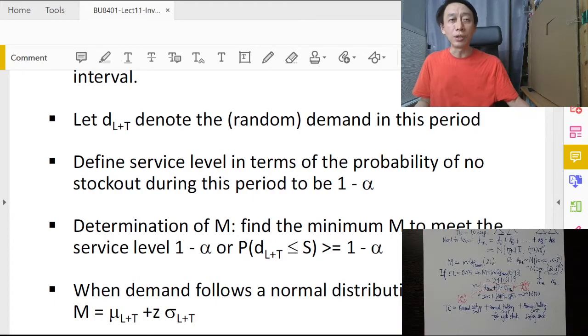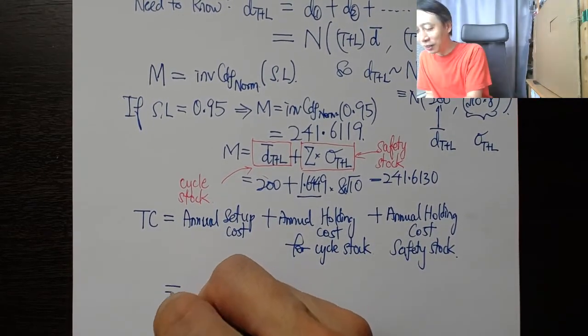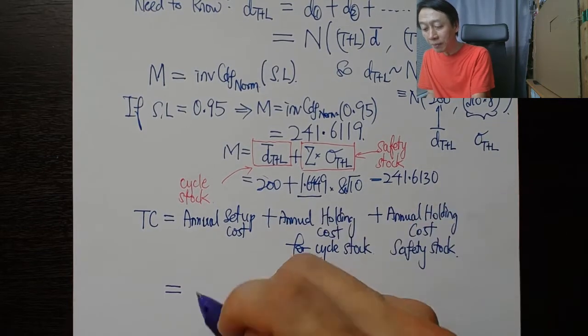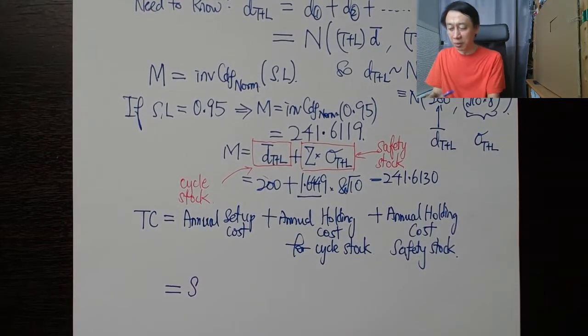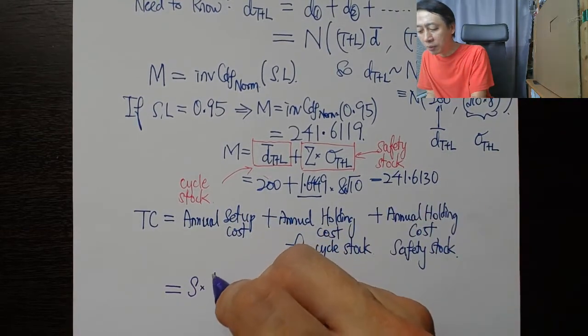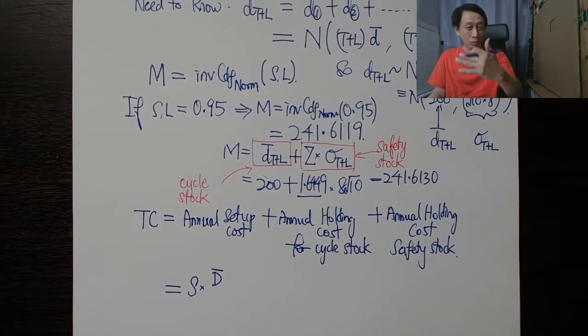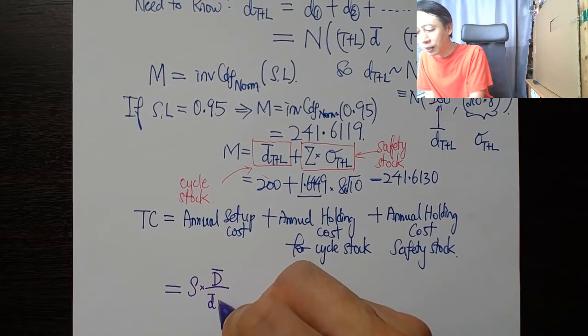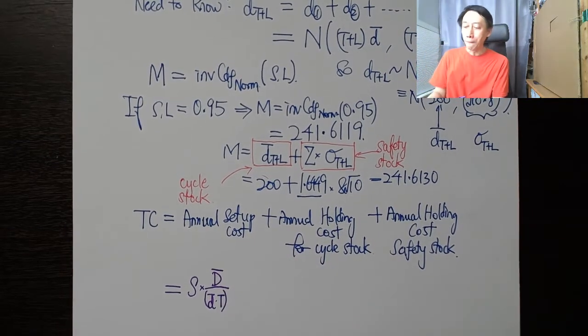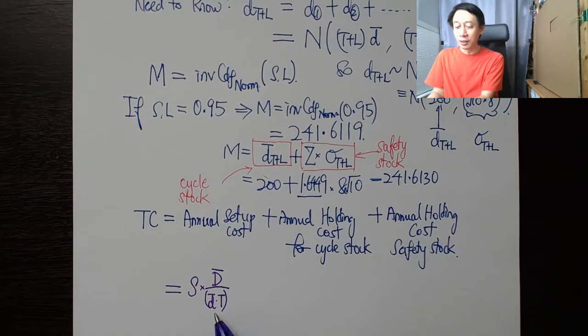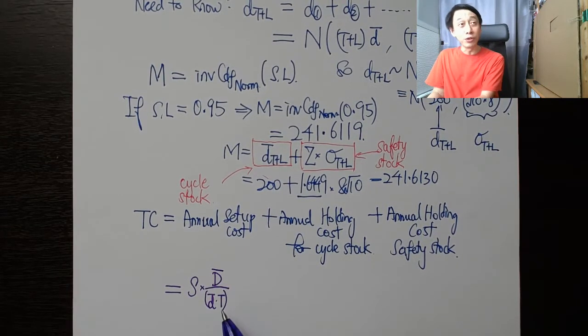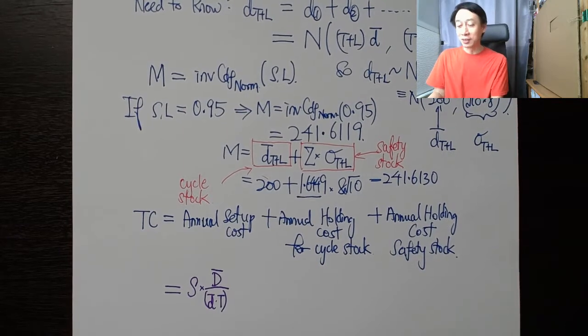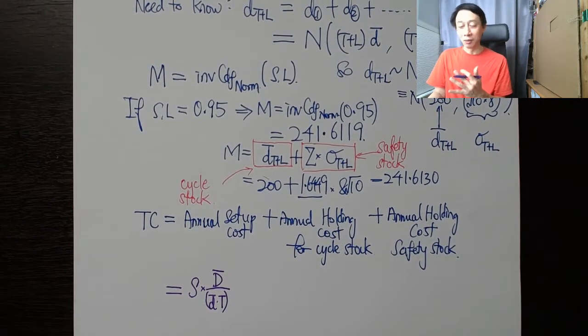Very much like the calculation of cost in continuous review with probabilistic demand, we have three components. Annual setup cost is going to be the setup cost per transaction per order times the annual demand, which is going to be the average annual demand (because annual demand now also fluctuates), divided by daily demand times T in days. The structure kind of looks similar because daily demand times T, but that term was originally occupied by Q, the order quantity, the fixed order quantity. But now we don't have quantity fixed, so we find a proxy.